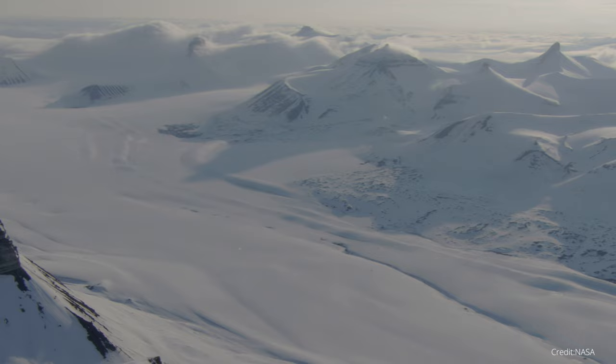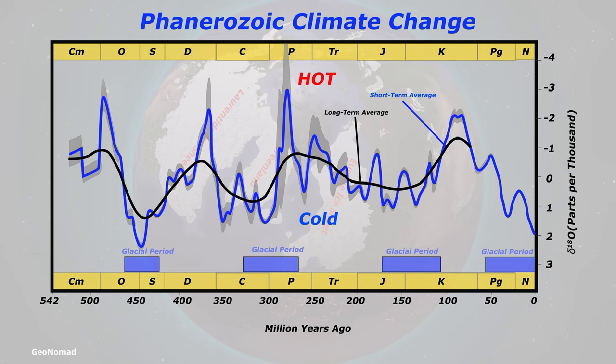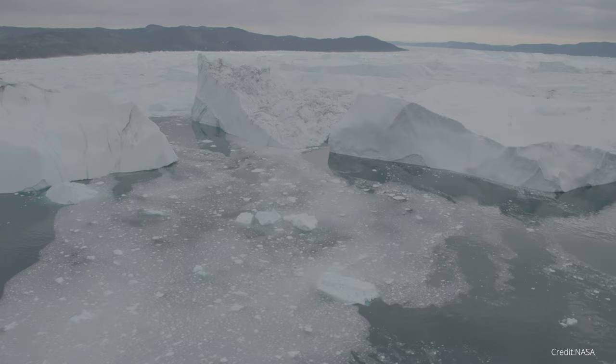In the last 500 million years of Earth's history, there have been at least four ice ages. However, even within the Ice Age, there were times when the weather was hot and there were times when it was cold.